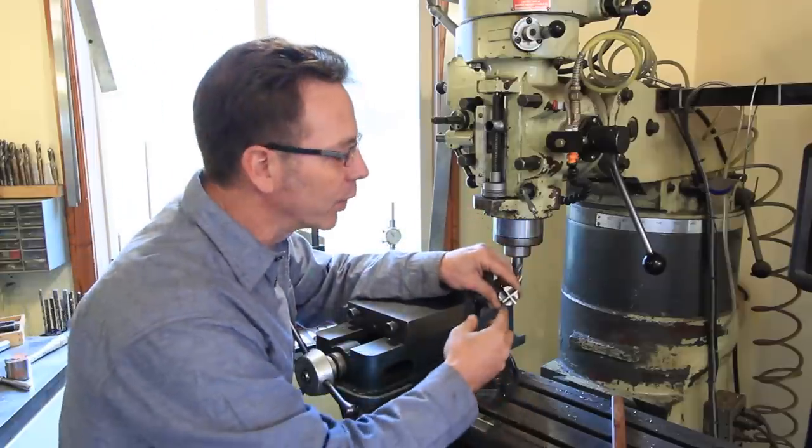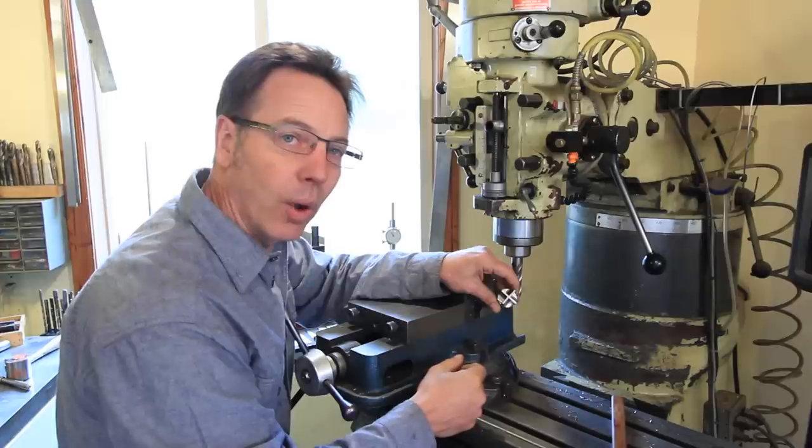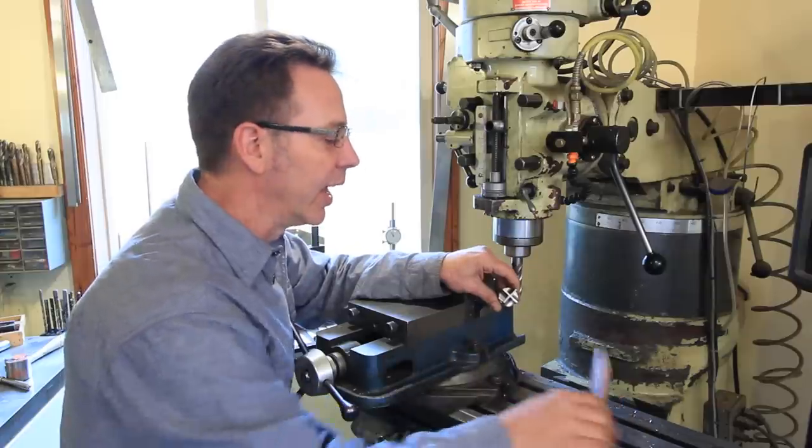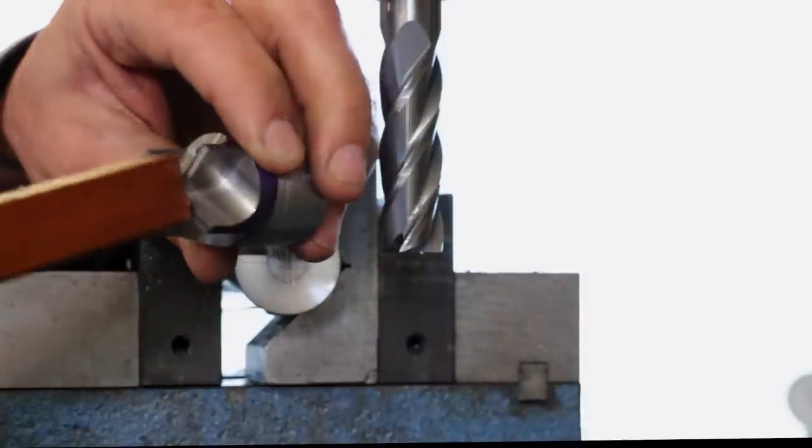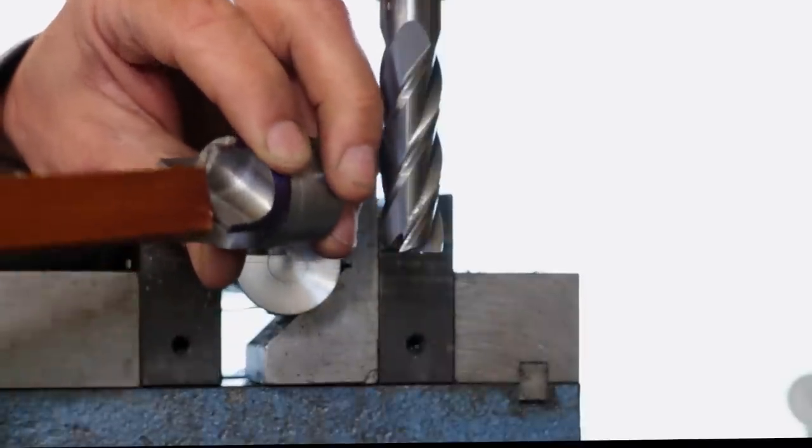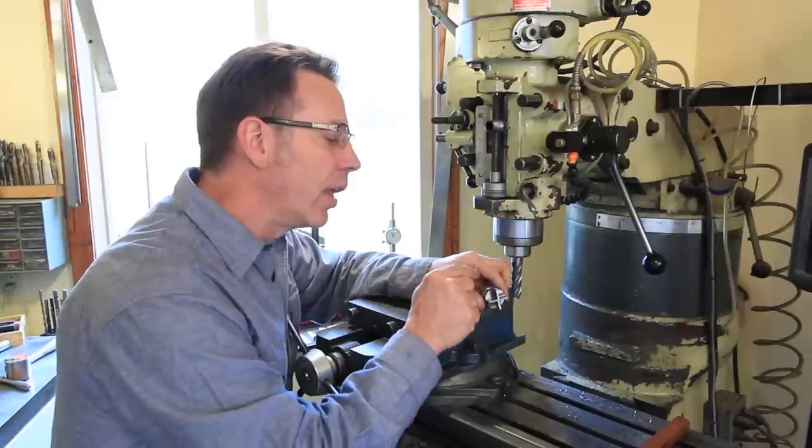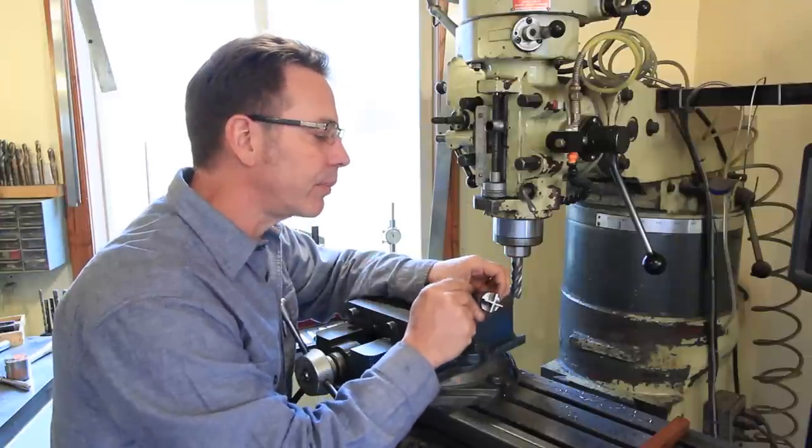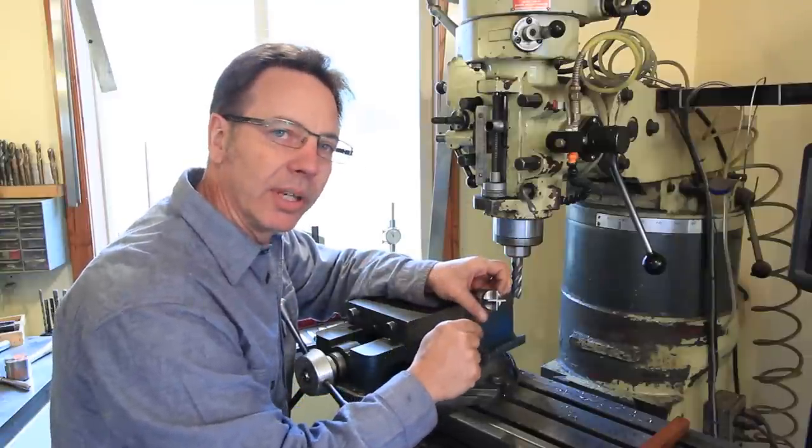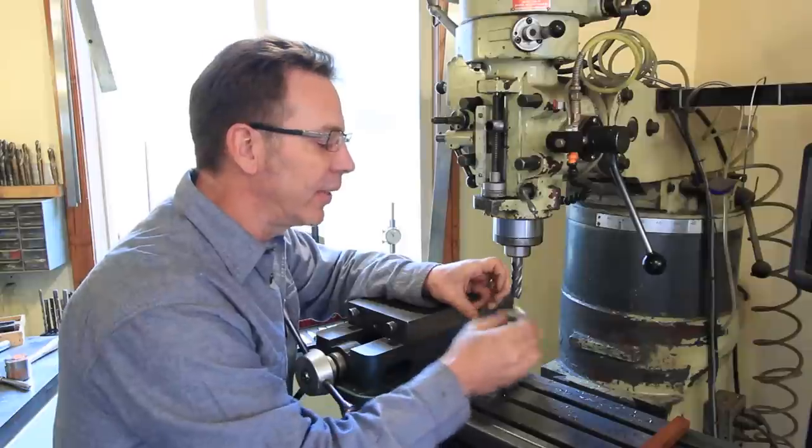Now a spur chuck, which we're going to make today, has four different quadrants and we're going to divide this out. A spur chuck is designed to hold a piece of wood in place for woodworking on the wood lathe.